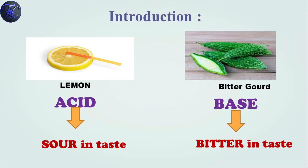You had already studied in your previous class that why salty taste or bitter taste is present in a food. Because of acid and base present in the food. The food which will be having acid is sour in taste. Let's take an example of lemon — why is lemon sour in taste? Because lemon contains citric acid. And bitter gourd contains base inside it, so it is bitter in taste.